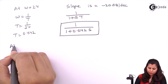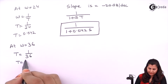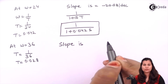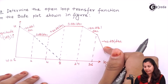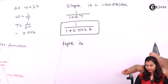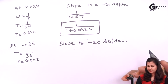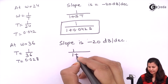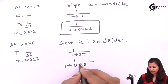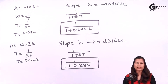At omega equals 36: T = 1/36 = 0.028. The slope changes from minus 20 to minus 40 dB per decade, a change of minus 20 dB per decade. Again a first order factor in the denominator, giving 1/(1 + 0.028s). Now let's combine all these factors to form the open loop transfer function.